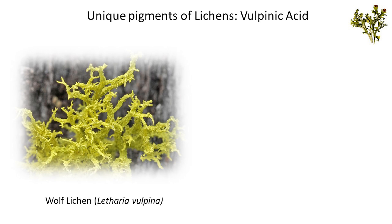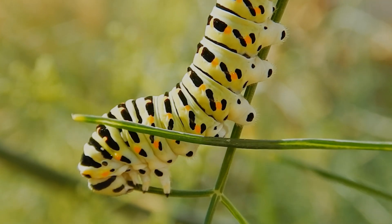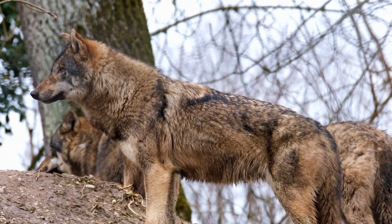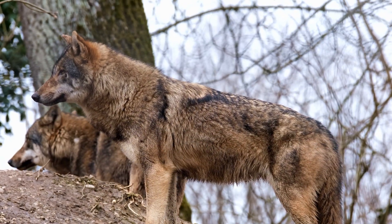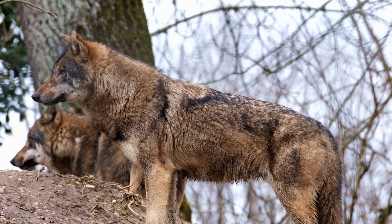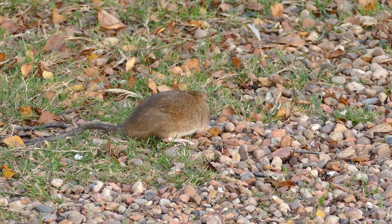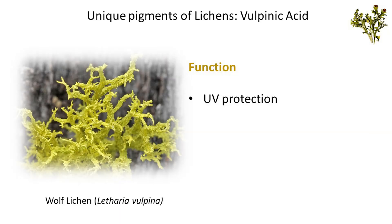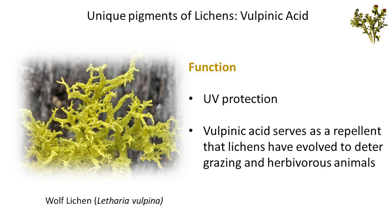Vulpinic acid is a bright yellow pigment first discovered in wolf lichen Letharia vulpina. Vulpinic acid is a toxic compound, particularly to meat-eating mammals, insects, and mollusks. In Scandinavia, it was historically used to poison wolves and foxes. However, vulpinic acid is not toxic to rabbits and mice. Lichens exploit the ultraviolet-blocking properties of the vulpinic acid molecule to protect the underlying photobionts. Additionally, vulpinic acid may serve as a repellent that lichens have evolved to deter grazing and herbivorous animals.